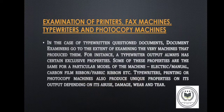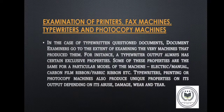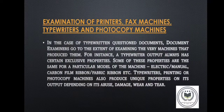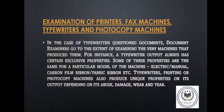Examination of Printers, Fax Machines, Typewriters and Photocopy Machines: In the case of typewritten questioned documents, document examiners go to the extent of examining the very machines that produced them. For instance, a typewriter output always has certain exclusive properties. Some of these properties are the same for a particular model of the machine — electric or manual, carbon film ribbon or fabric ribbon. Typewriters, printing, or photocopy machines also produce unique properties on their output depending on their abuse, damage, and wear and tear.